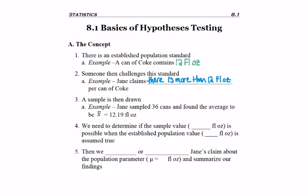So what she'll do is she goes out and she samples 36 cans of Coke and she finds the average to be 12.19 fluid ounces. Notice it's x̄ because that's her sample data.